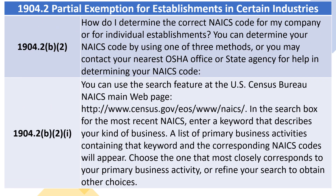1904.2(b)(2): How do I determine the correct NAICS code for my company or for individual establishments? You can determine your NAICS code by using one of three methods, or you may contact your nearest OSHA office or state agency for help in determining your NAICS code.